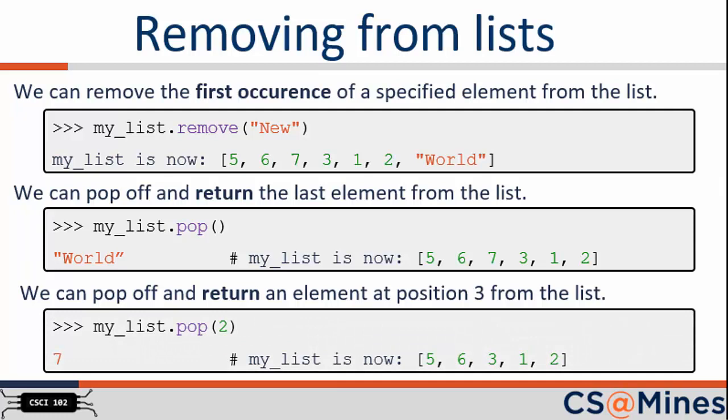Finally, if we give the pop function an index, it will pop the element from the list at that index. As before, the pop function returns the value of that index, or 7 in this case, as 7 was at that index of myList.